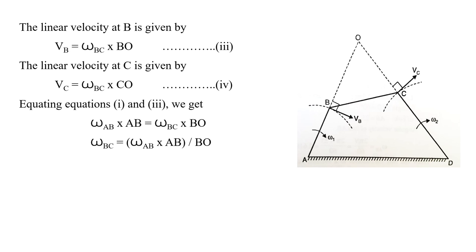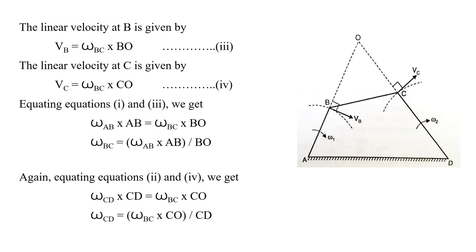The linear velocity at B is given by V_B = omega_BC × BO, and the linear velocity at C is given by omega_BC × CO. By equating these with the earlier expressions, omega_BC = (omega_AB × length of AB) / BO. Similarly, by equating the expressions for the velocity of C, omega_CD = (omega_BC × CO) / length of CD.